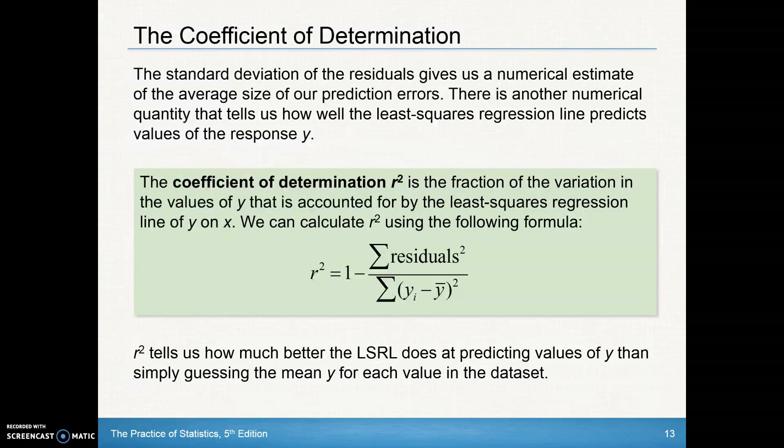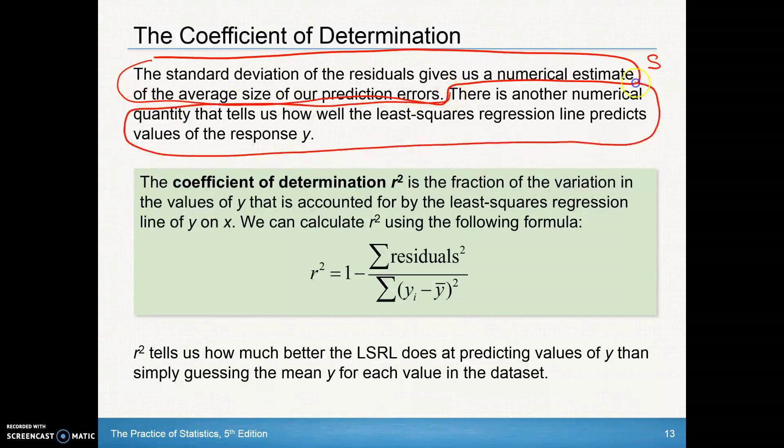There's another numerical quantity that tells us how well the least squares regression line predicts the values of y. This first part describes the s. This other part that tells us how well it fits is what we'll call our r-squared. Well, the r-squared is the coefficient of determination.